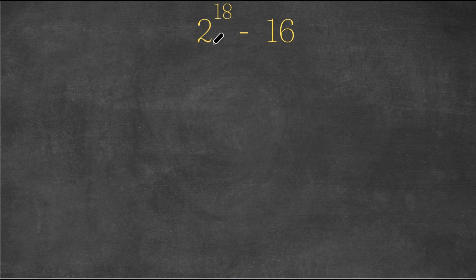So we have 2 to the power of 18 minus 16. Now I can rewrite 2 to the power of 18 as 2 to the power of 9 squared.